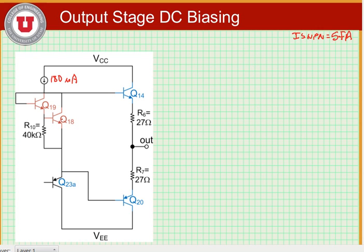Now we see we have the 180 microamps that flows from Q13A into the diode connected transistors Q18 and Q19. So we can write here that VBE18 is equal to I19 times R10, which is equal to VT times the natural logarithm of I18 divided by 5 femtoamps, which is our saturation current for an NPN device in this process.